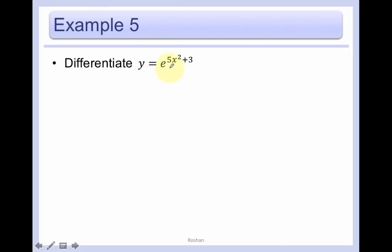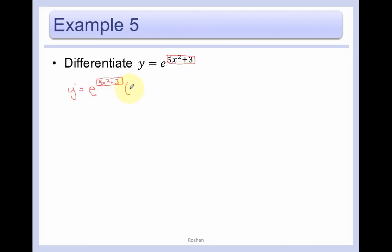Let's differentiate y equals e to the 5x squared plus 3. We have e to the something — here's our baby, 5x squared plus 3. The derivative of e to the box is e to the box, so leave the baby inside, times the derivative of the box, which is 10x. Our answer is 10x times e to the 5x squared plus 3.